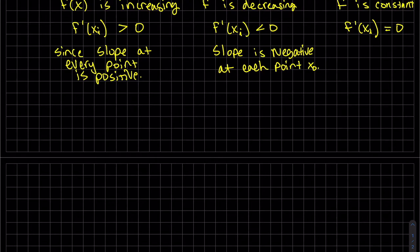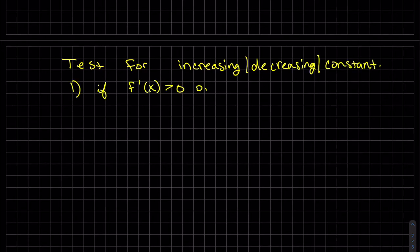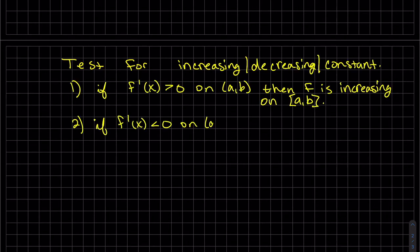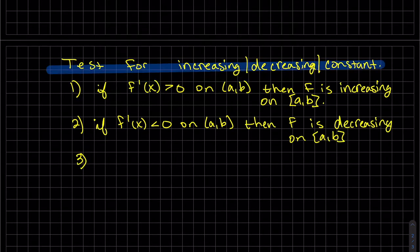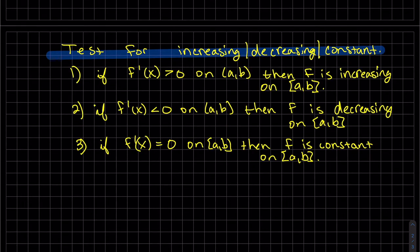This is basically our test for increasing, decreasing, and constant. If the derivative is greater than zero — positive — we have an increasing function. If the derivative is negative on the interval, then the function is decreasing on that interval. If the derivative equals zero, then f is constant on (a, b). We do include the endpoints because the last point will be bigger than the previous one.